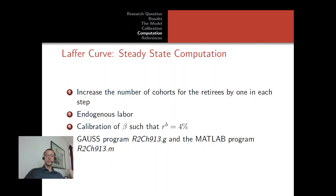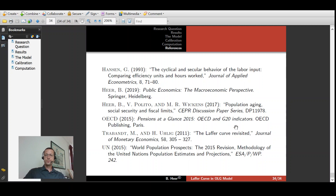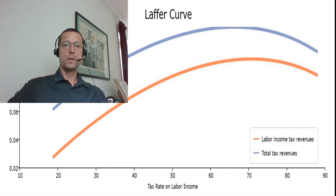The main reference is Trabant and Ulich, 'Laffer Curves Revisited,' Journal of Monetary Economics. We build on the OLG model by Herr Polito and Wiggins but use annual periods. Data come from the OECD and UN, and Ramsey model results are taken from Public Economics Chapter 5. Thank you for following this first part of the tutorial; the second part will cover the computation in detail.